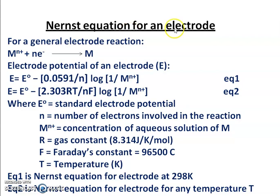The Nernst equation helps us to correlate the electrode potential with the electrolyte concentration — that means the metal that is dipped in the metal salt solution. The electrode potential developed has a direct bearing on the concentration of the metal salt solution. For a general electrode reaction, the metal is dipped in the metal salt solution, and the electrode potential is represented by equation 1 as E0 minus 0.0591 divided by N, log of 1 divided by the metal salt solution concentration.